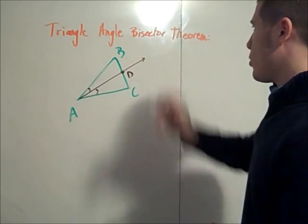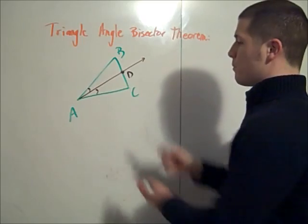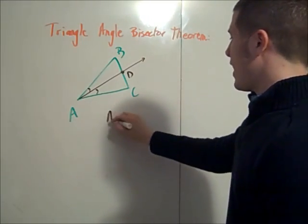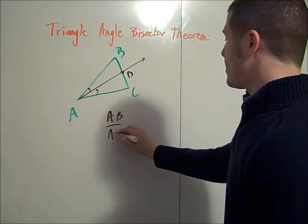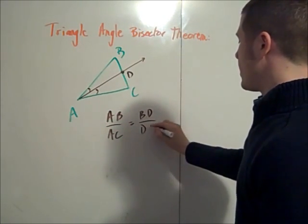Then the triangle angle bisector theorem says that this angle bisector cuts the side BC proportionally to the other sides AB and AC. Specifically, AB over AC is equal to BD over DC.